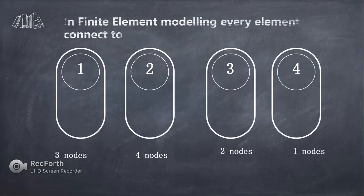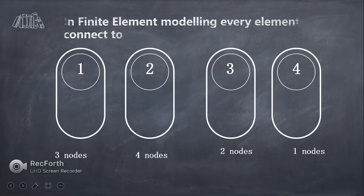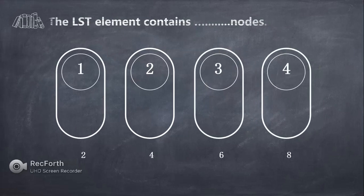The sixth question is: in finite element modeling, every element is connected to how many nodes — 3, 4, 2, or 1? Elements such as a 1D bar element have nodes at their ends. For a single element, it is defined with 2 nodes, so the third option — 2 nodes — is the right answer.